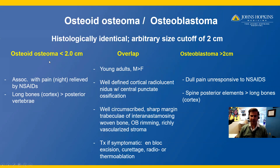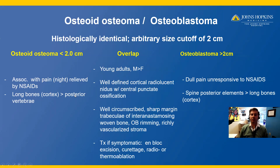There are some additional clinical features that may be associated with one versus the other. Osteoid osteomas are typically less than two centimeters, associated with pain more often at night that is relieved by NSAIDs. Osteoid osteoma typically occurs in long bones and the cortex of a long bone, more so than in the posterior elements of the vertebrae.